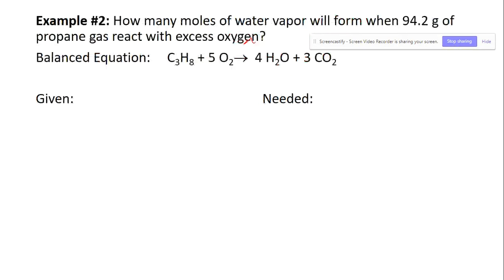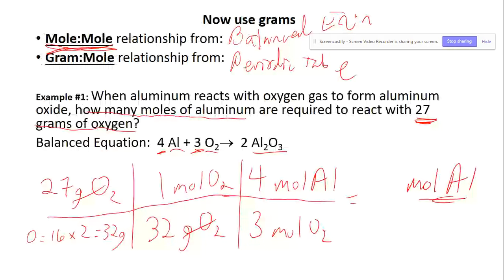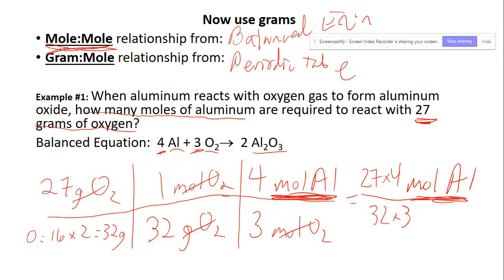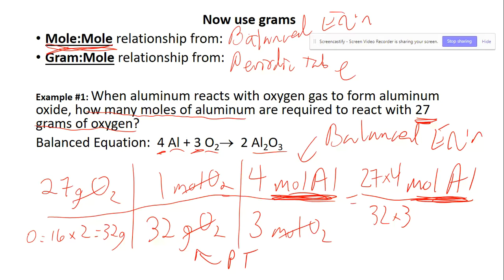The coefficient for aluminum is 4 and for oxygen is 3. So you multiply 27 times 4 and divide by 32 times 3. Moles of oxygen cancel, leaving moles of aluminum as the units. This ratio came from the balanced equation and the 32 came from the periodic table. The answer with significant figures is 1.1 moles of aluminum.